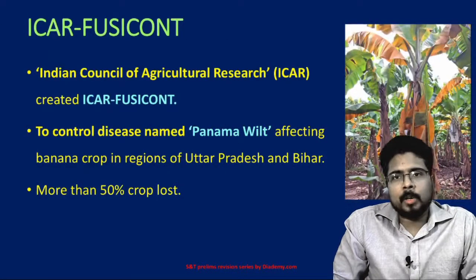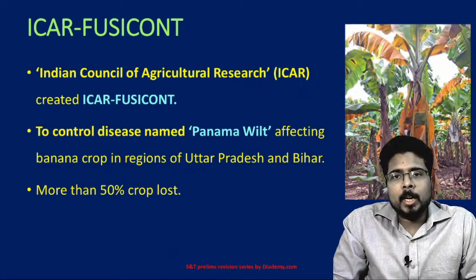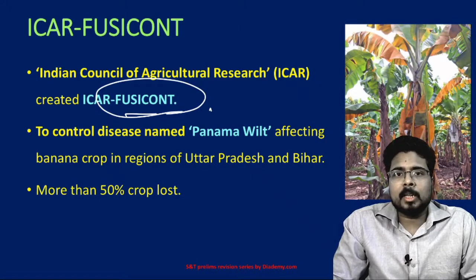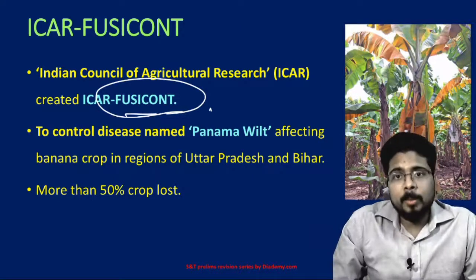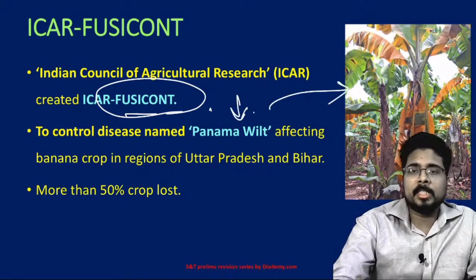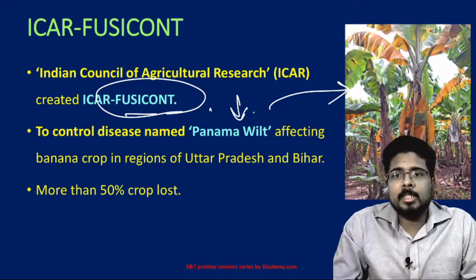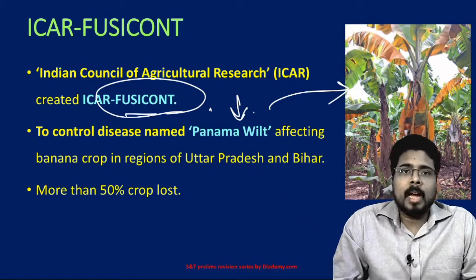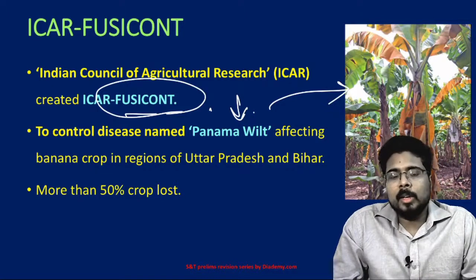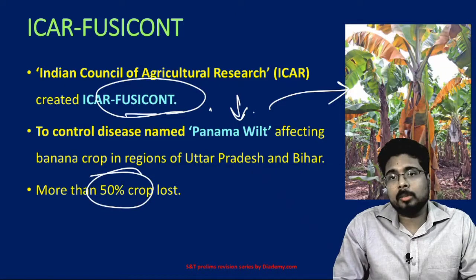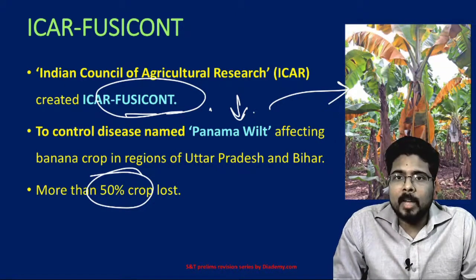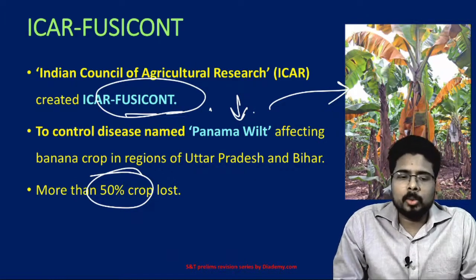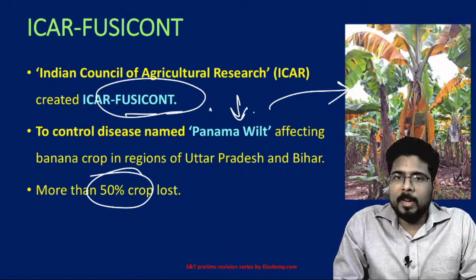Next, ICAR Fusicont. This is created by the Indian Council of Agricultural Research (ICAR). Fusicont is a pesticide developed to control a disease called Panama wilt, which damages banana crops. You can see the image — Panama wilt is causing significant damage to banana crops. Because of this disease, more than 50 percent of the crop is lost, which pushes farmers into deep debt. ICAR Fusicont was developed to control Panama wilt.